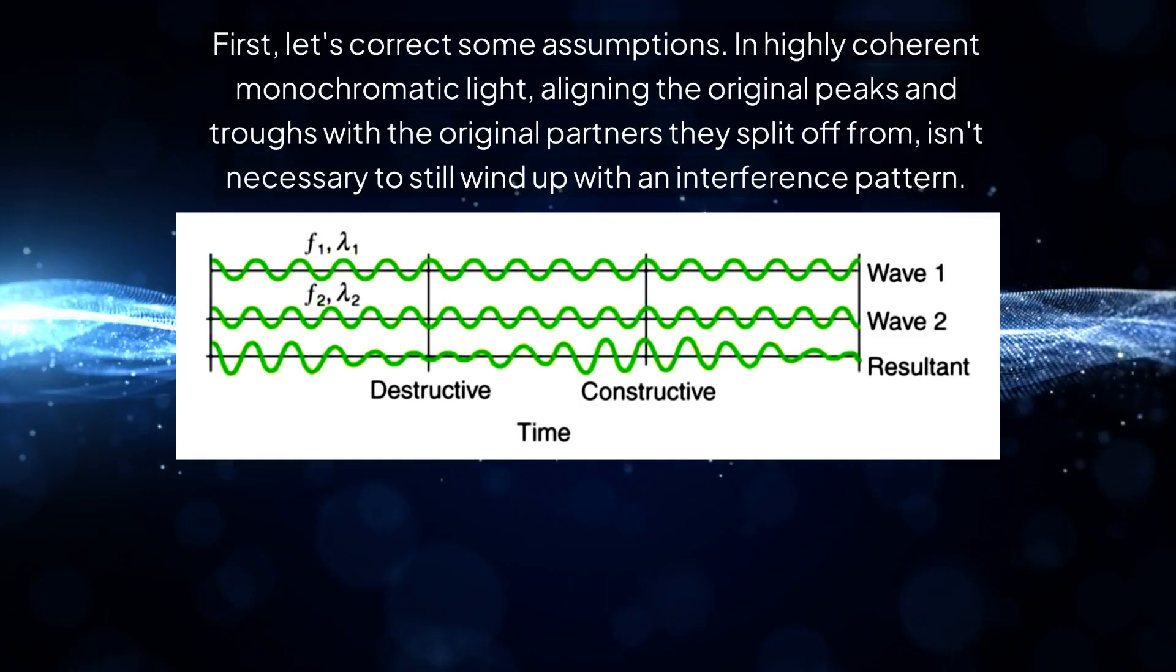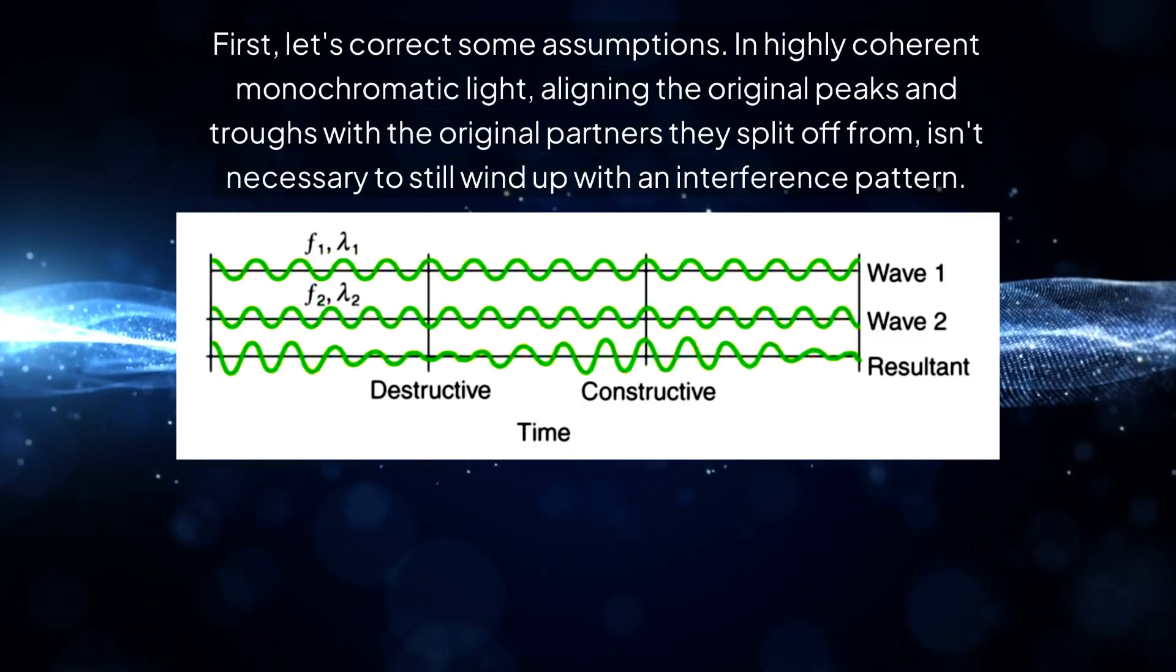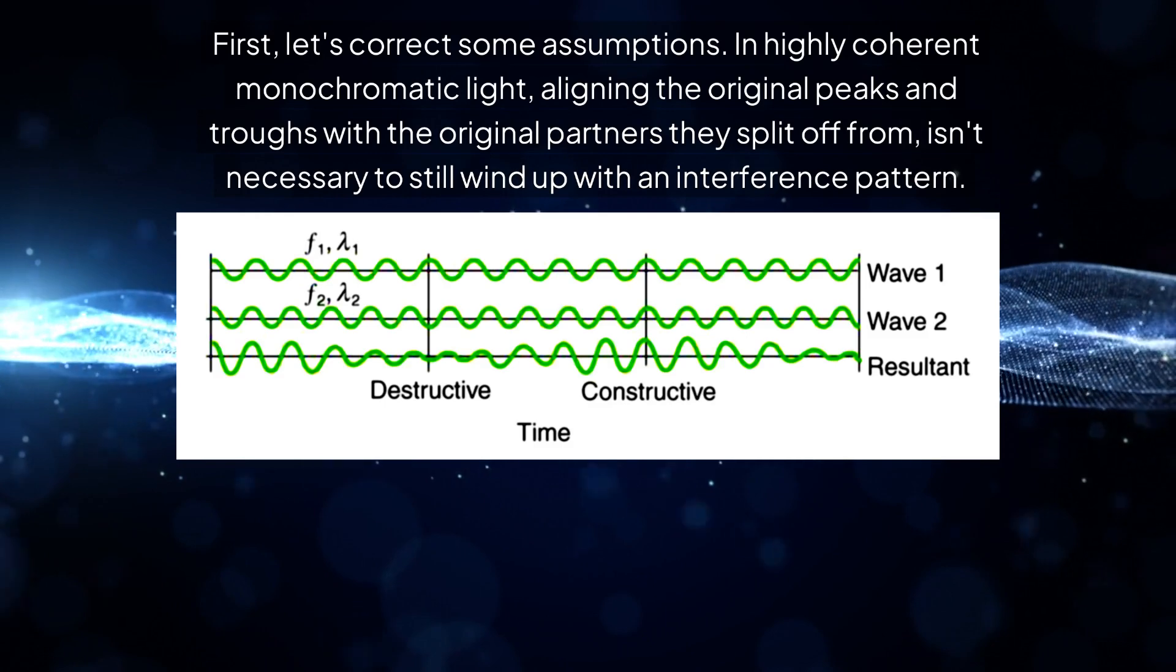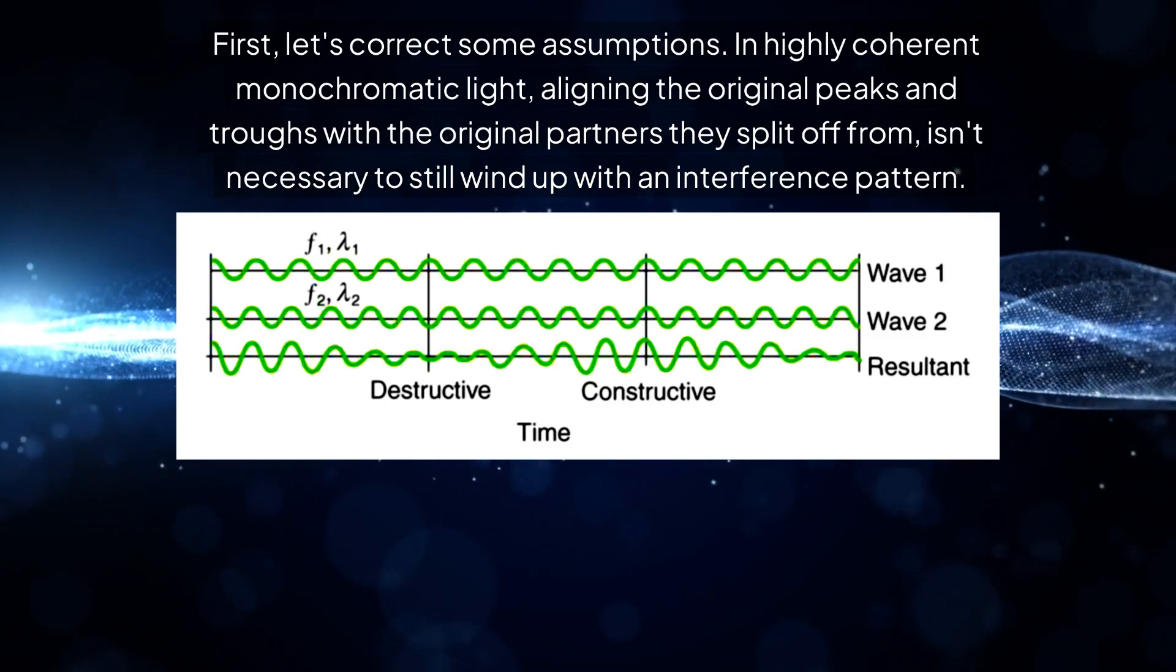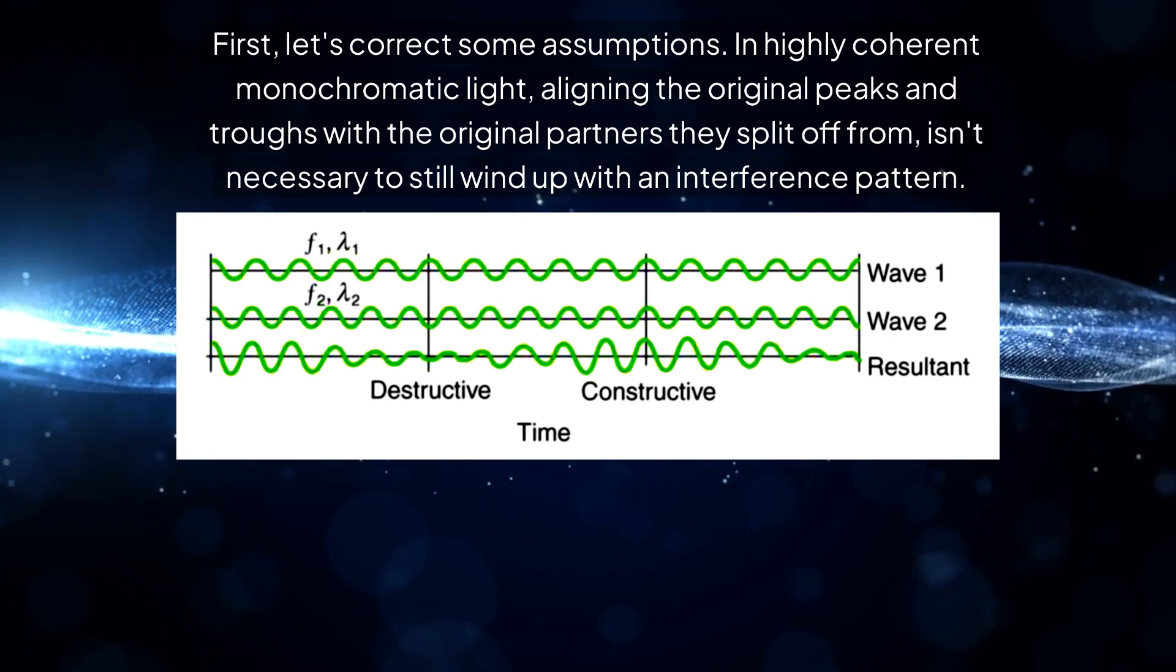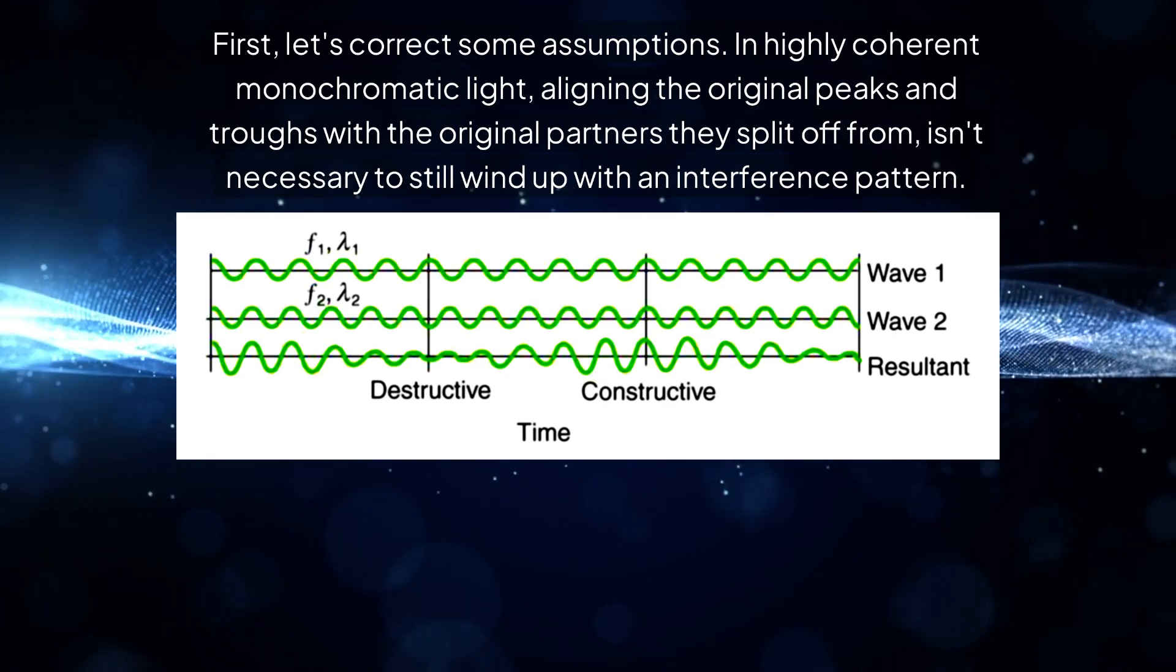First, let's correct some assumptions. In highly coherent monochromatic light, aligning the original peaks and troughs with the original partners they split off from isn't necessary to still wind up with an interference pattern.